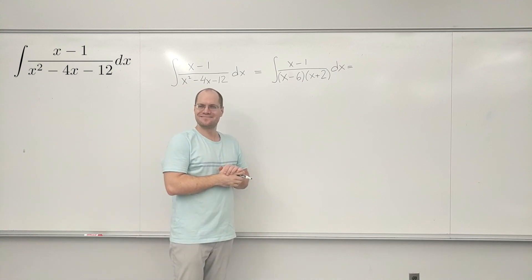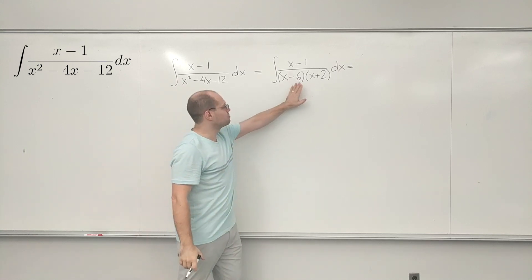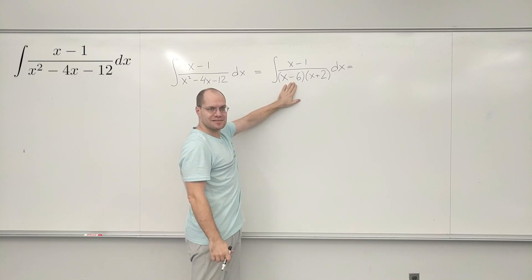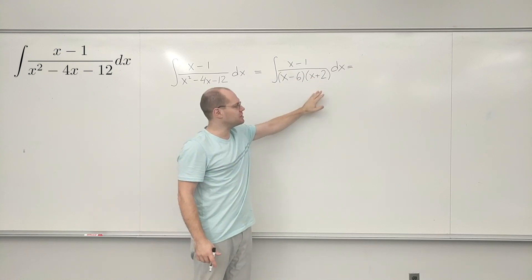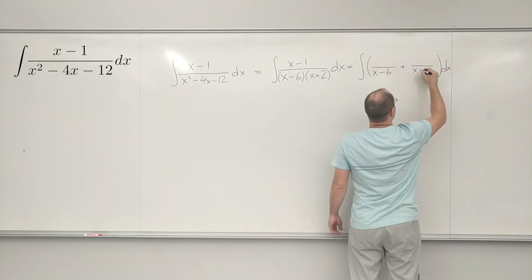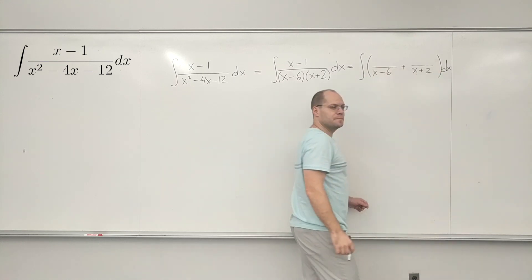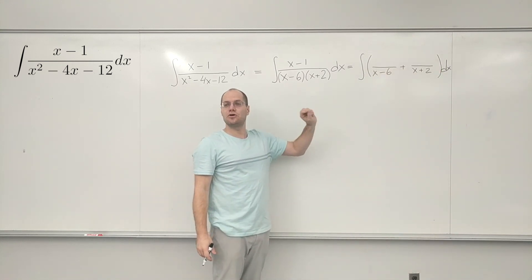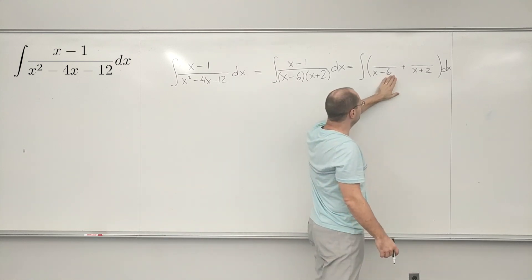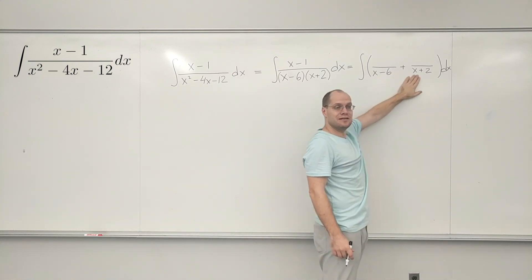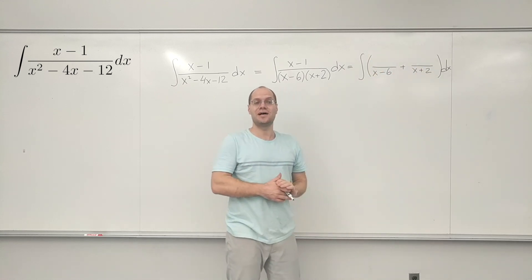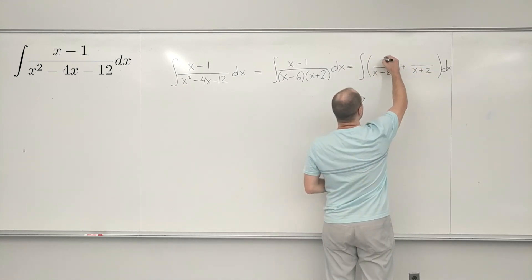There it is. Next, break this up into two fractions: one has x minus 6 in the denominator, the other has x plus 2. We don't yet know what goes in the numerators, except that they'll be constants, because both of these are linear factors. We'll denote them by A and B.